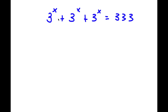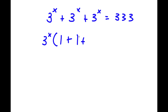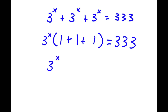In this problem I have three to the power of x plus three to the power of x plus three to the power of x is equal to 333. To solve this, I'm first going to factor out three to the power of x from my left hand side. So now I have three to the power of x times one plus one plus one, and this is equal to 333. Adding what's in the parentheses gives three, so I have three to the power of x times three is equal to 333.